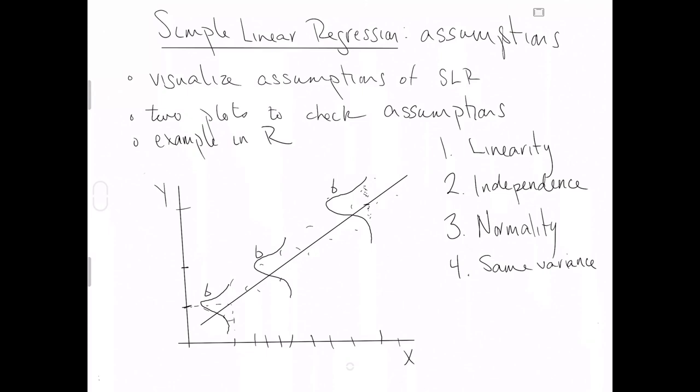So those are your four assumptions for simple linear regression. Three of them are nearly identical to the assumptions for analysis of variance. If you memorize those, there's really just one more for simple linear regression — and honestly, it shows up in the name of the method: simple linearity regression. That should help you remember.